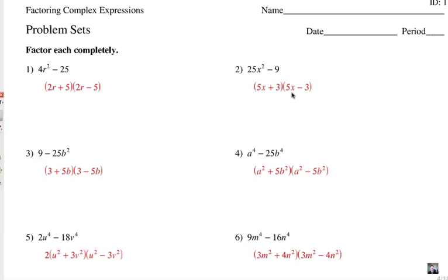Number two, 5x plus 3, 5x minus 3. Number three is 3 plus 5b, 3 minus 5b. Notice how the variable could be in the second term.